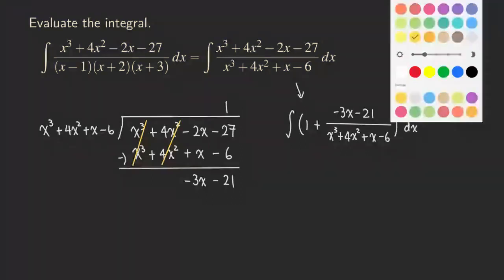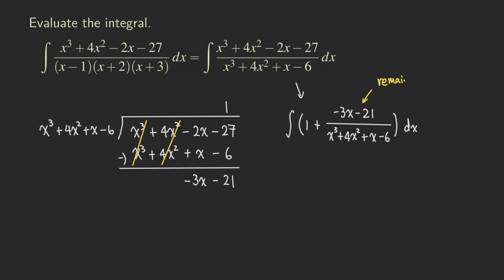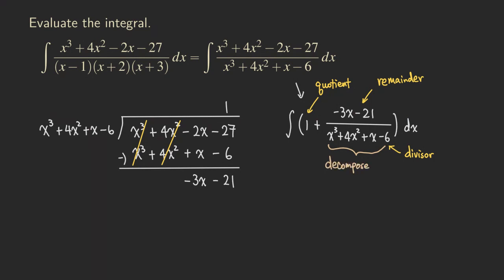Just to label some things: this is our remainder, and this is the divisor, and this one right here is the quotient. If you feel rusty with long division, we're just reviewing how to write down the answer. Okay, so the next thing is that we are going to decompose just this fraction — not the original one, but just this one. It's going to be simpler. We are going to be decomposing this whole fraction into partial fractions.